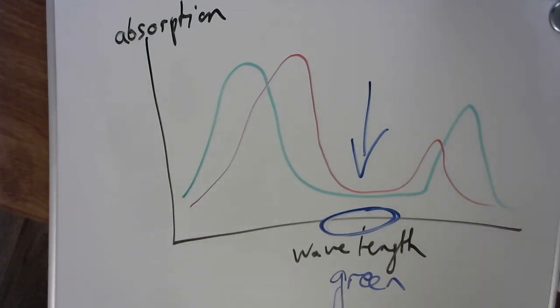And so detecting that, trees are like, oh, becoming winter, better shut down the photosynthesis systems and stop doing that, going in dormancy until we have better conditions in the spring.